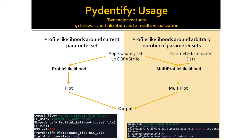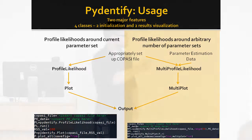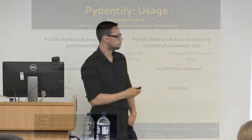We have four classes, two on each side: one for initialization and one for visualization and calculation of confidence intervals. Down at the bottom here we can see an example of code. The whole idea was to make it easy and quick to use — both sides work with four lines of code.